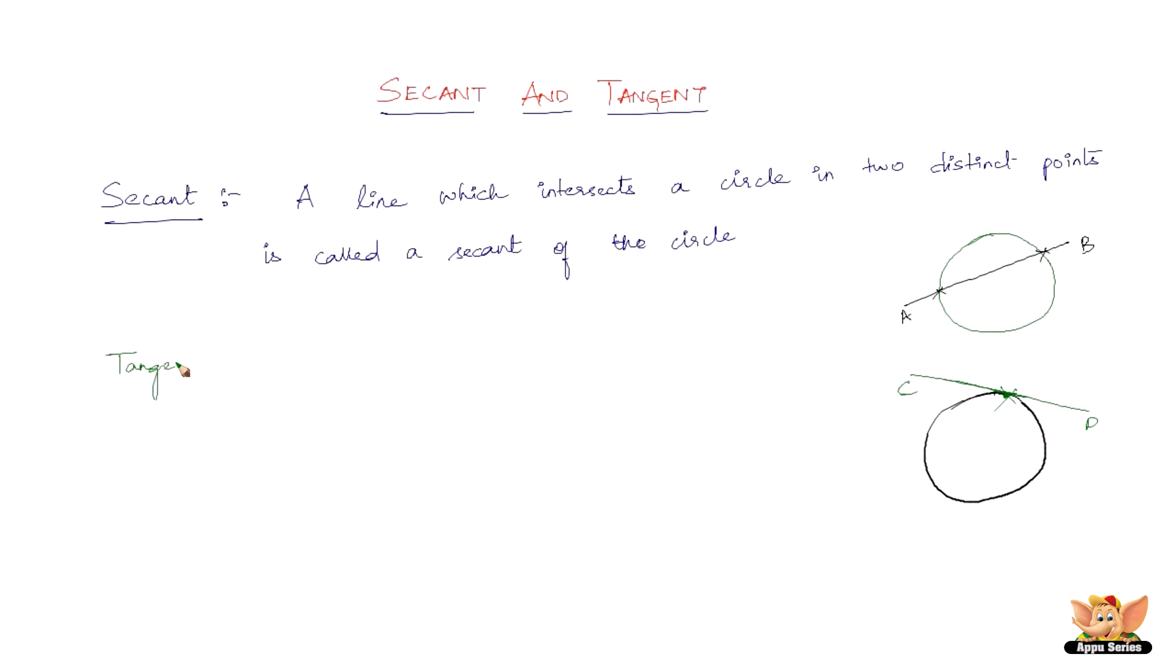Now, let me write definition for tangent. So here we are with the definition for this kind of line. Well, it is defined like this. A tangent to a circle is a line that intersects the circle in exactly one point. So that is what this line CD is. So this line CD is the tangent to this circle here.